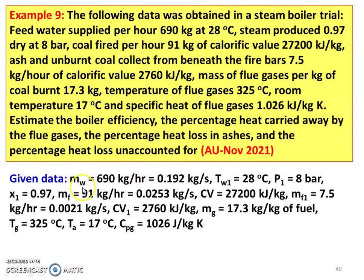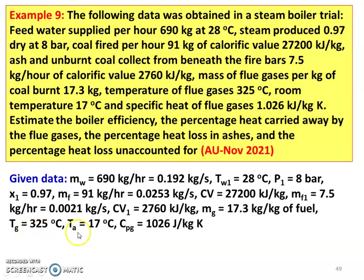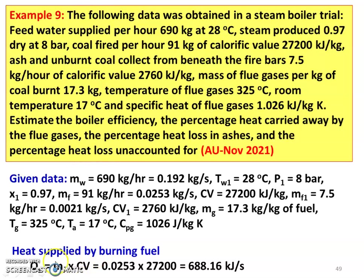Given data: mass of water evaporated M_w = 690 kg/hr = 0.192 kg/s; water temperature T_w1 = 28°C; pressure = 8 bar; dryness fraction = 0.97; mass of fuel M_f = 91 kg/hr = 0.0253 kg/s; calorific value = 27,200 kJ/kg; mass of unburnt fuel M_f1 = 7.5 kg/hr = 0.0021 kg/s; calorific value of unburnt coal = 2760 kJ/kg; mass of gases = 17.3 kg per kg of fuel; gas temperature = 325°C; air temperature = 17°C; specific heat of gases = 1.026 kJ/kg·K. Heat supplied by burning the fuel: Q_s = M_f × CV = 0.0253 × 27,200 = 688.16 kJ/s.